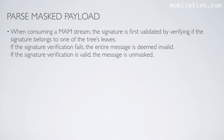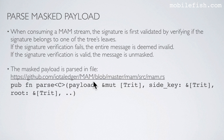When consuming a memstream, the signature is first validated by verifying if the signature belongs to one of the three leaves. If the signature verification fails, the entire message is deemed invalid. If the signature verification is valid, the message is unmasked. The mask payload is parsed in this file in the parse function.